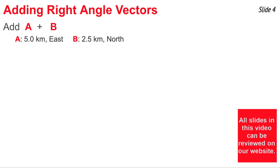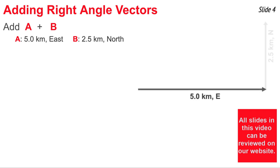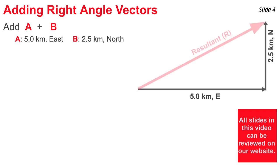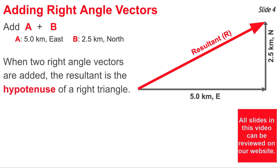Understanding the head-to-tail method preps you for what's special about adding right angle vectors. We'll use this example to illustrate. Vector A is 5 kilometers east and B is 2.5 kilometers north. First we draw A, then we add B with its tail at the arrowhead of A. Then we draw the resultant from the tail of A to the arrowhead of B. You notice that this resultant is the hypotenuse of a right triangle.